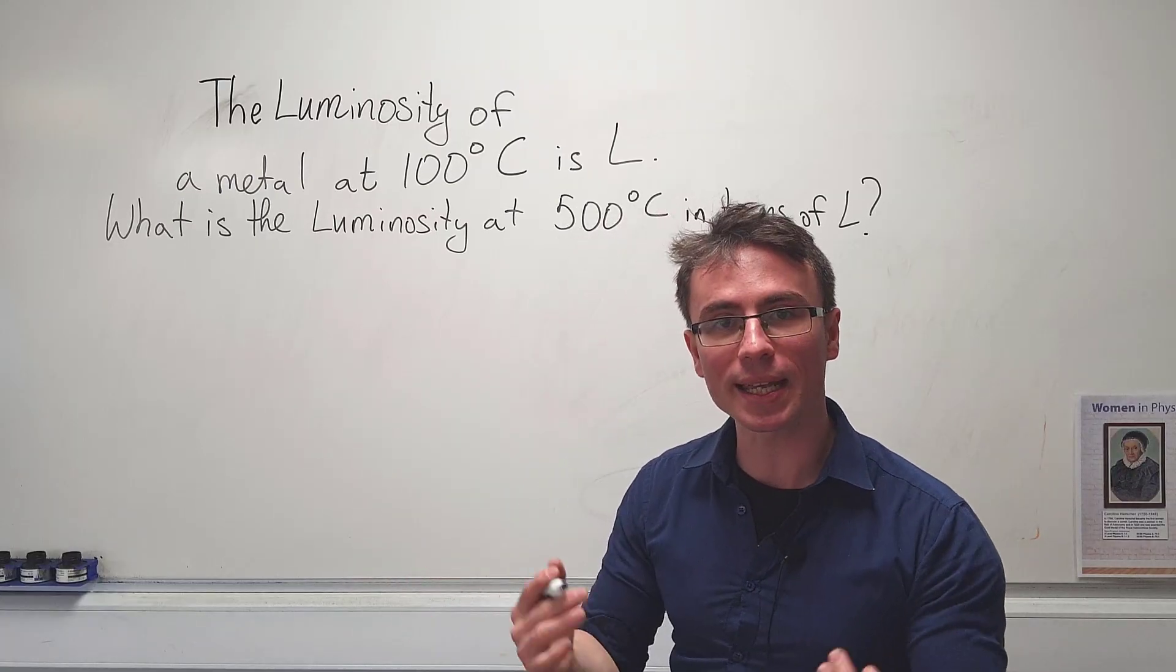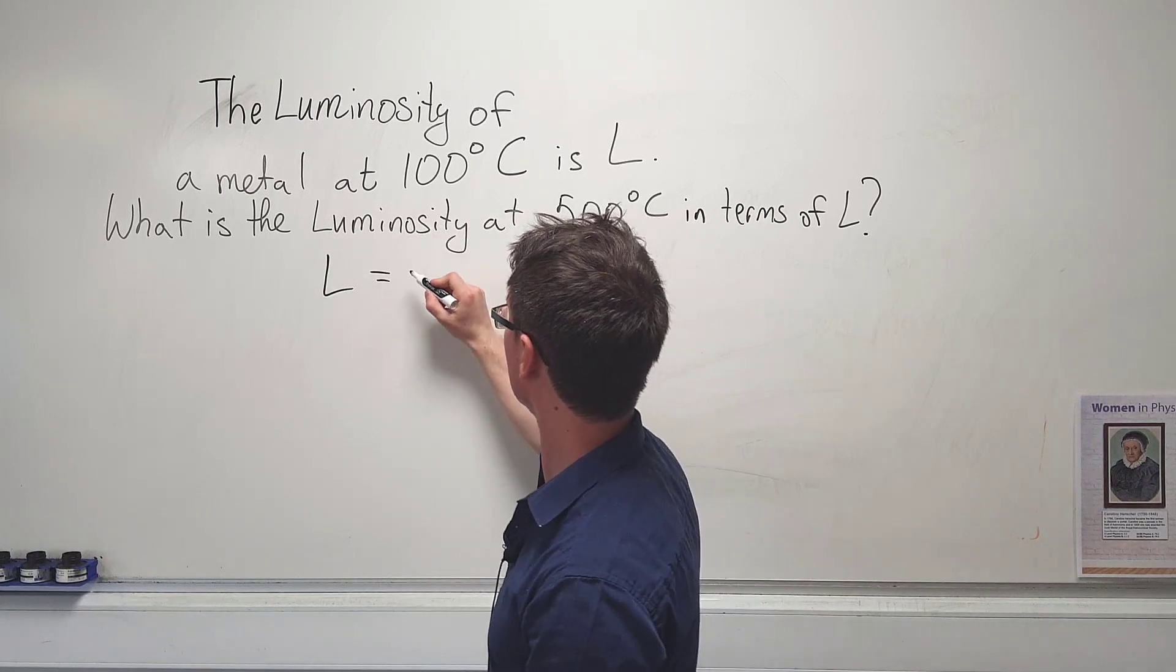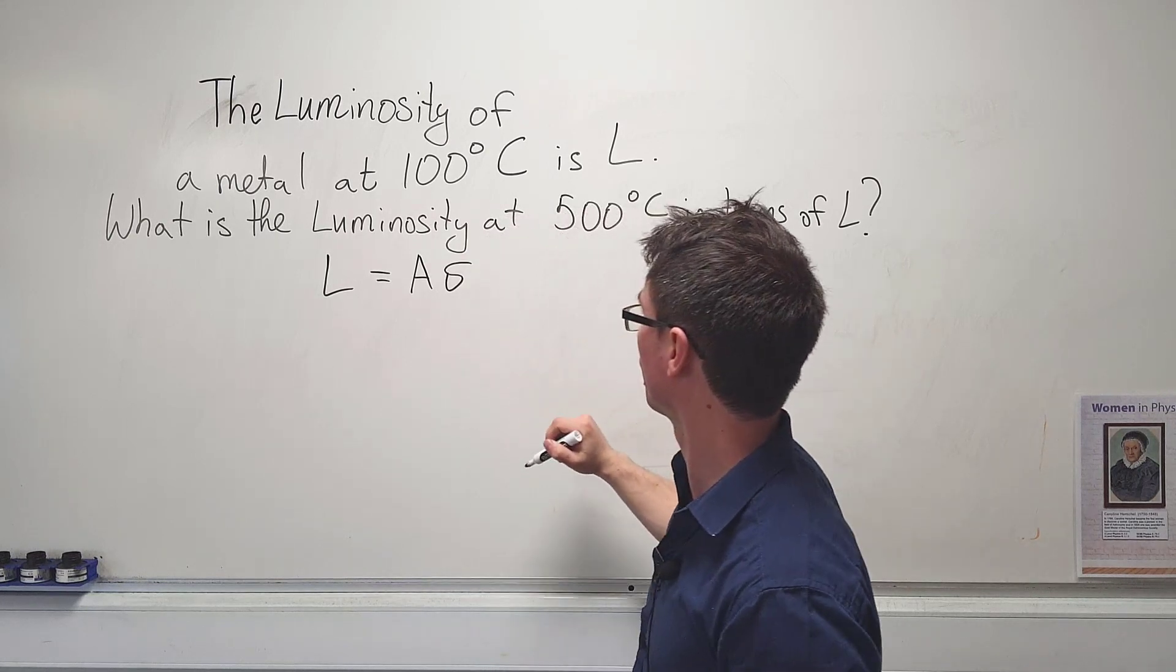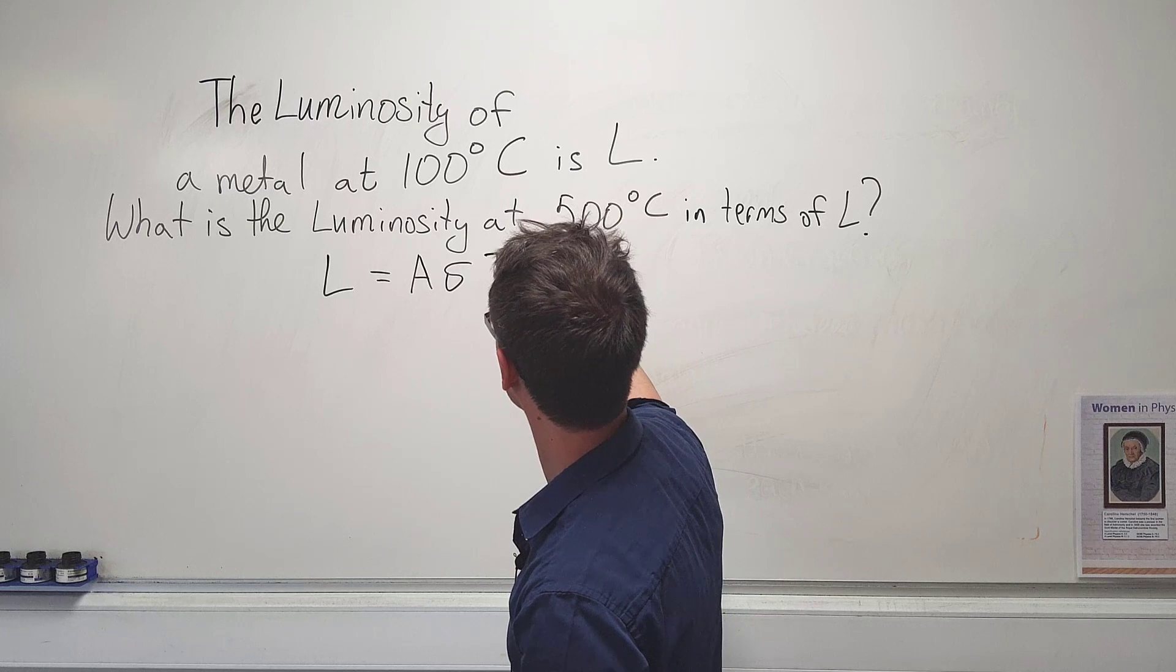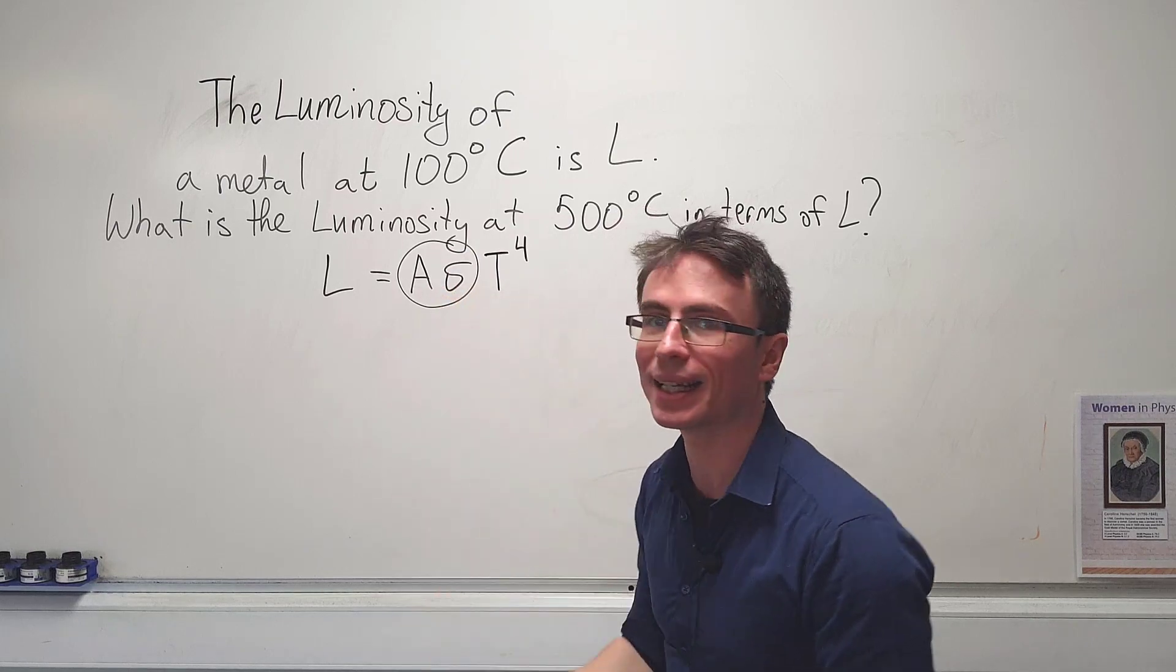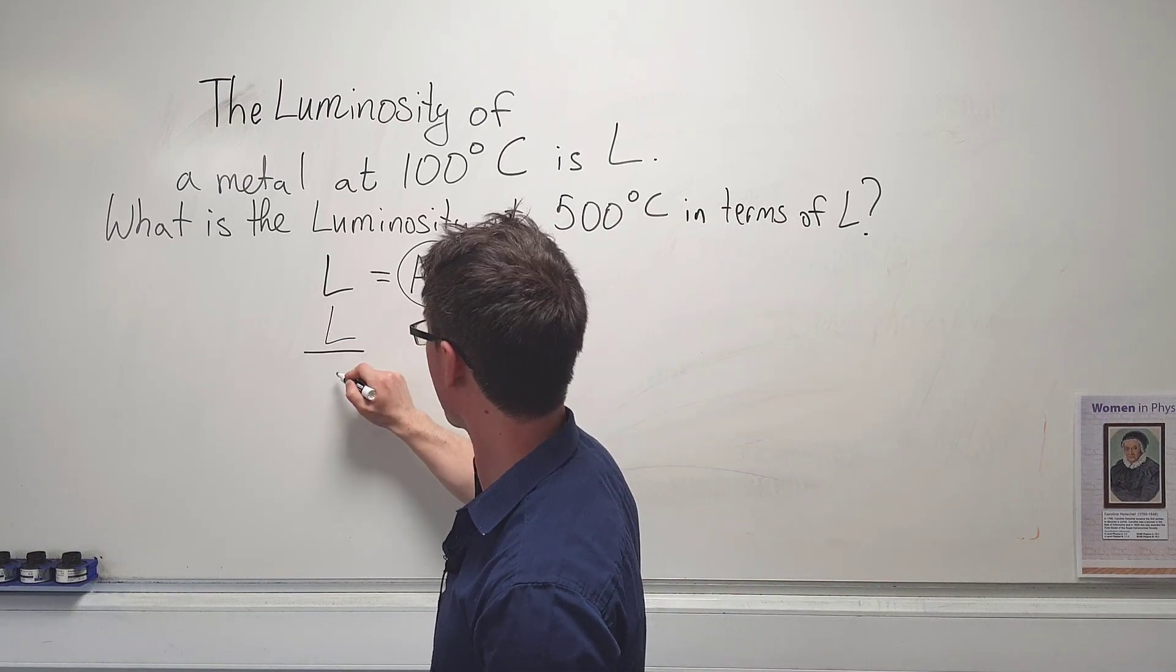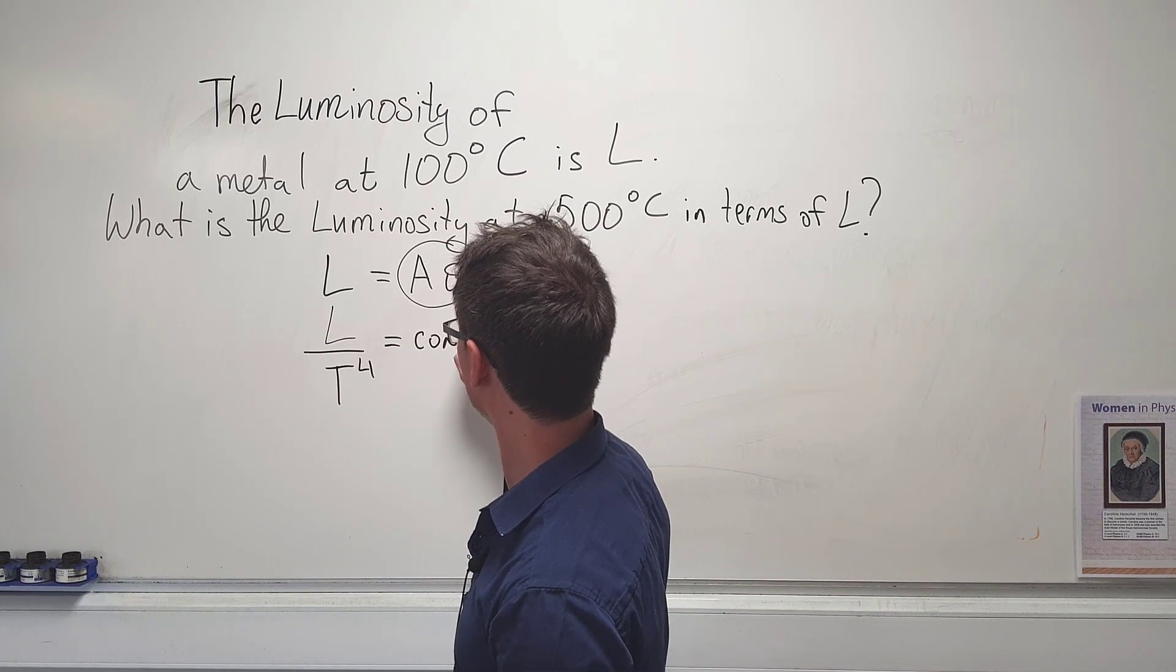The luminosity is given by Stefan Boltzmann's law which says that L is equal to the area of the metal multiplied by Stefan Boltzmann's constant and then we have the temperature raised to the power of 4. Now everything here is actually a constant so we can say that L over T to the power of 4 is a constant.